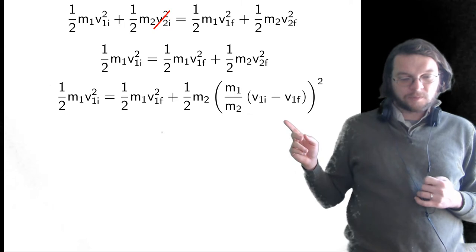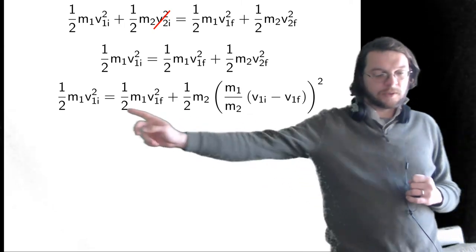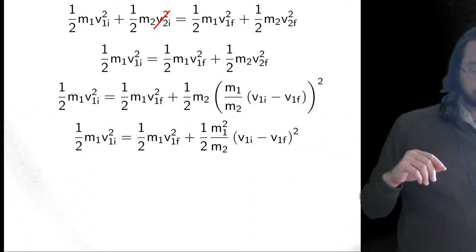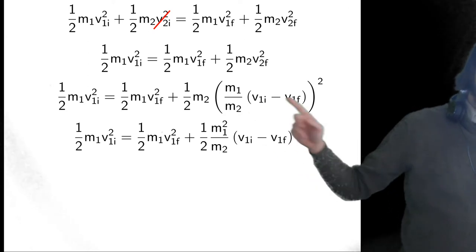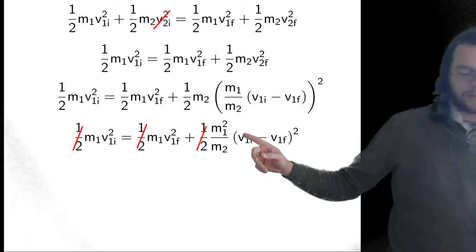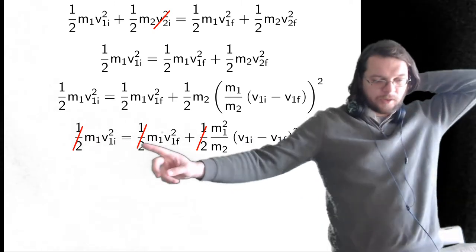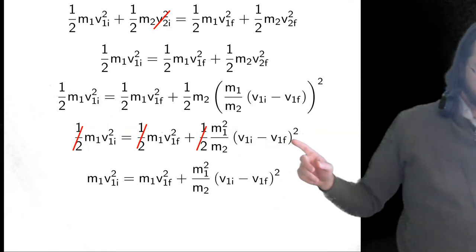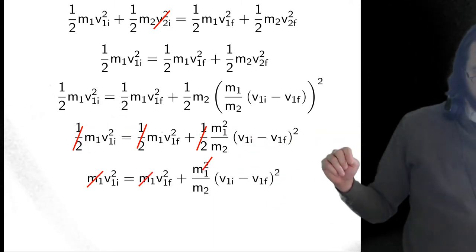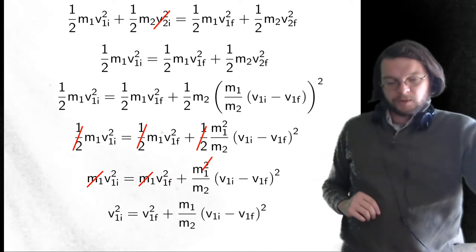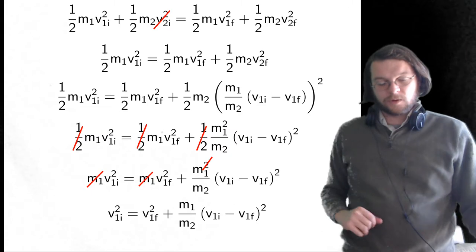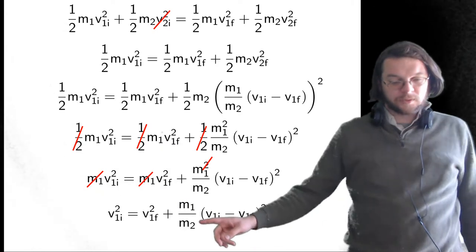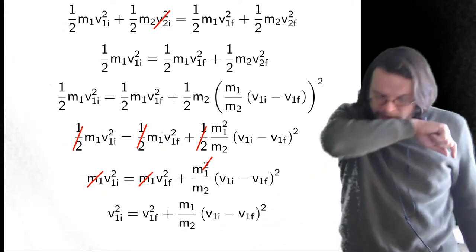After multiplying by 2, we also notice there's an M1 here, an M1 here, and even an M1 squared term. So we can divide by M1. After that step we end up with a cleaner expression. Our goal is to solve for V1F. To do that involves kind of a clever trick. We subtract V1F from both sides, which gives us V1I squared minus V1F squared on one side, and V1I minus V1F squared on the other.